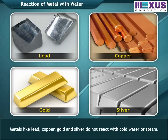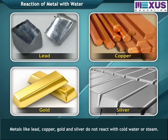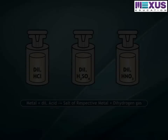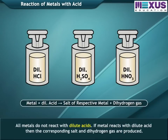Metals like lead, copper, gold, and silver do not react with cold water or steam. Not all metals react with dilute acids; if a metal does react with dilute acid, then the corresponding salt and dihydrogen gas are produced.